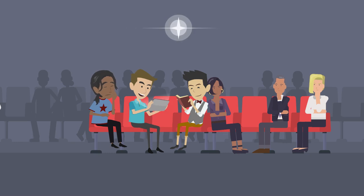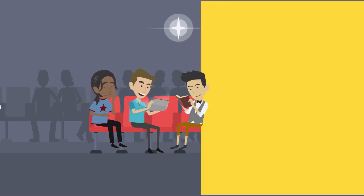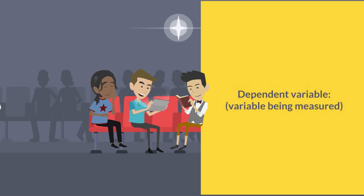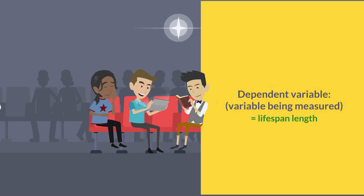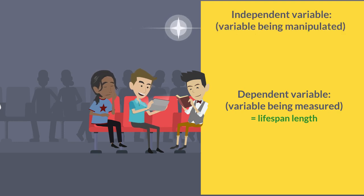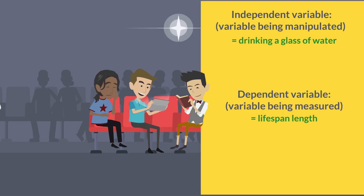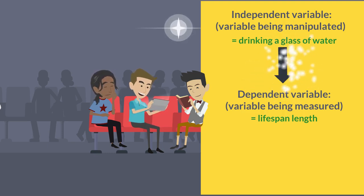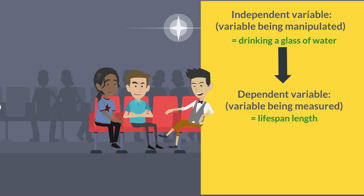Of course, this conclusion isn't valid. In this experiment, the dependent variable — that is, the variable the experimenter was trying to measure — was lifespan length, and the independent variable — that is, the variable that was changed by the experimenter — was drinking a glass of water. One of the things needed for a conclusion to be valid is that the independent variable has to be the only thing that influences the dependent variable.